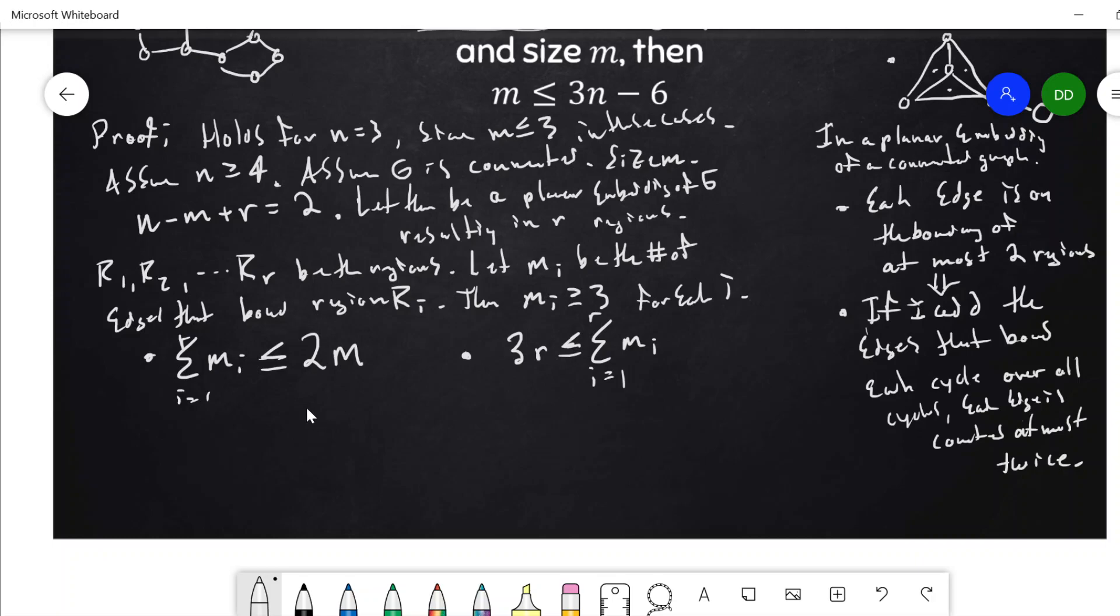So maybe I could have written that a little bit better, but I have these two inequalities. So that is three r is less than or equal to the sum of the m sub i's, i equal one to r, which is less than or equal to two m.